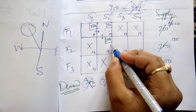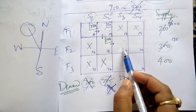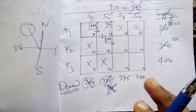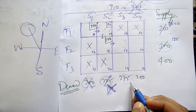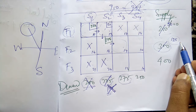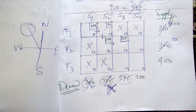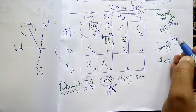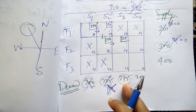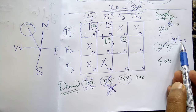Northwest Corner Method now moves us to the box for supplying Store 3 from Factory 2. The demand of Store 3 is 275, but Factory 2 can only supply 125 goods. So we put 125 here — Factory 2 supplies all its remaining goods to Store 3. Factory 2 is now exhausted, so we cross the box for Factory 2 to Store 4.